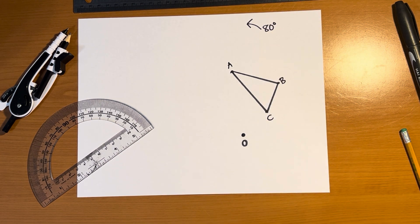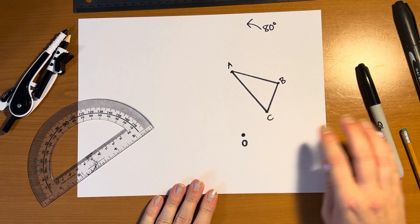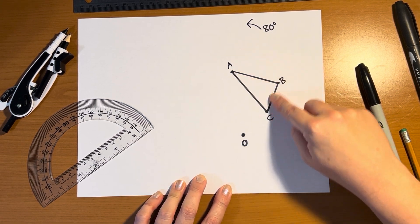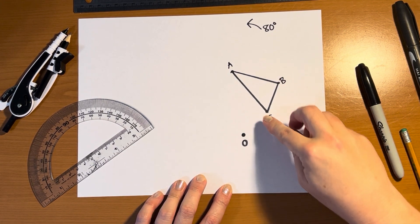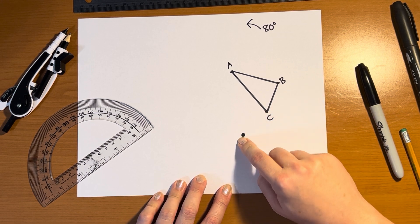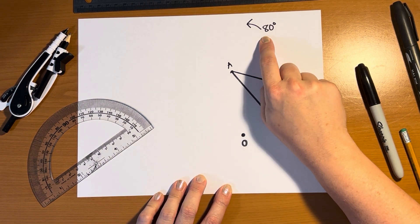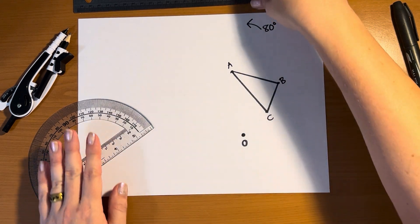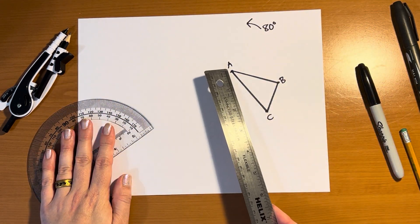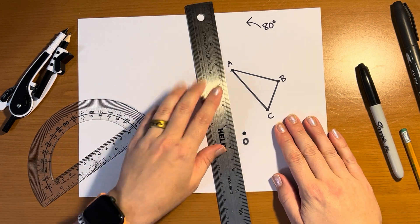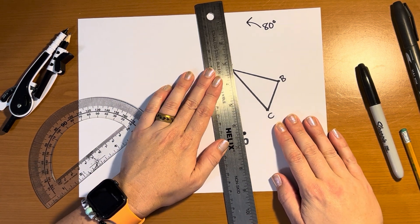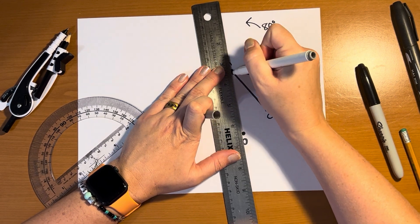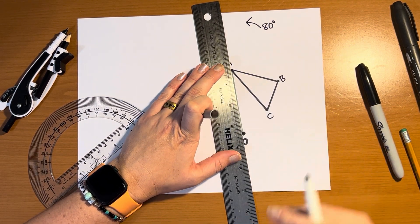So when I rotate, the goal is to make an angle with center O for each of these points on the triangle so that the original point and O and the new point form this 80 degree angle. So the first step that I'm going to take, we're going to start with point A, just because I labeled it A. And I'm going to draw a line from A to O using my ruler.